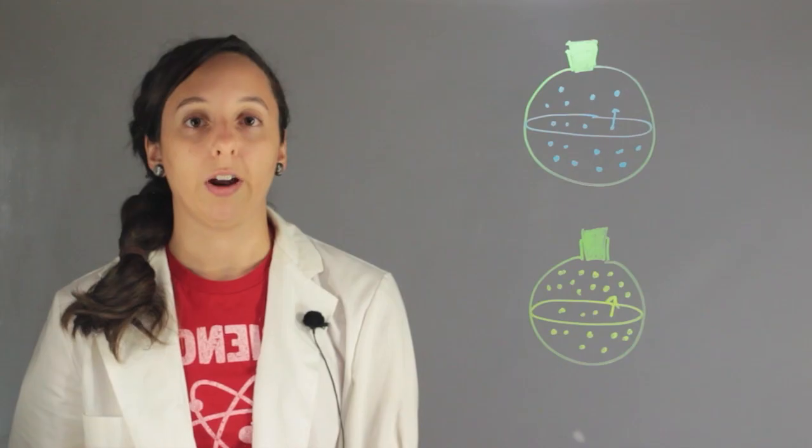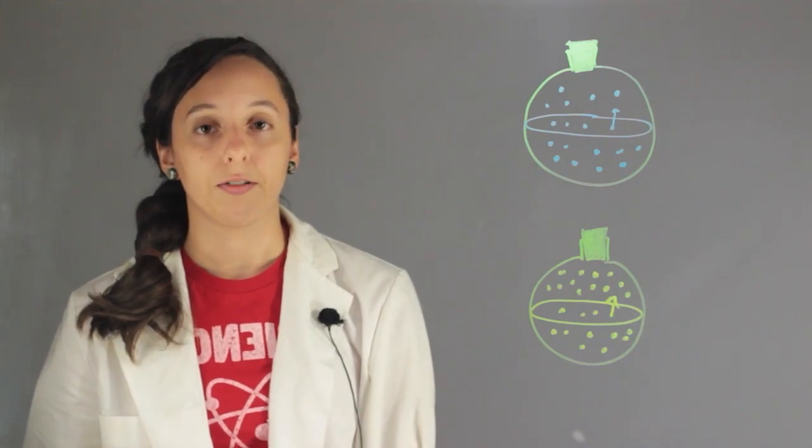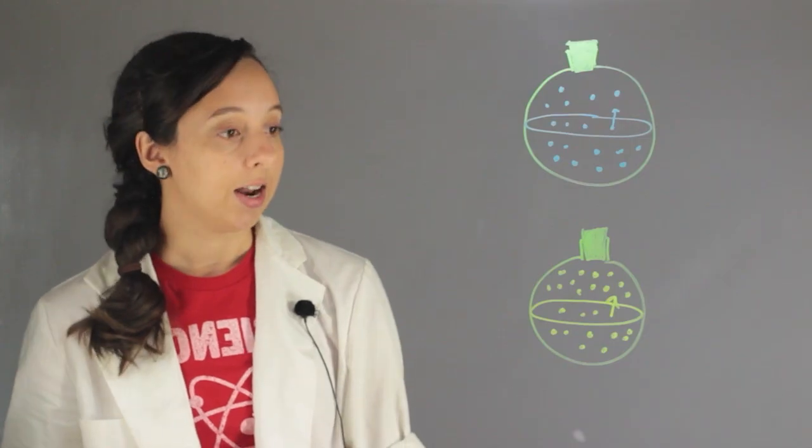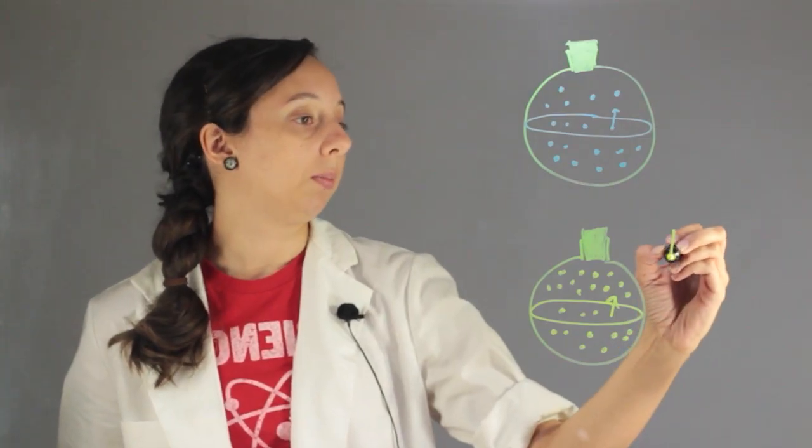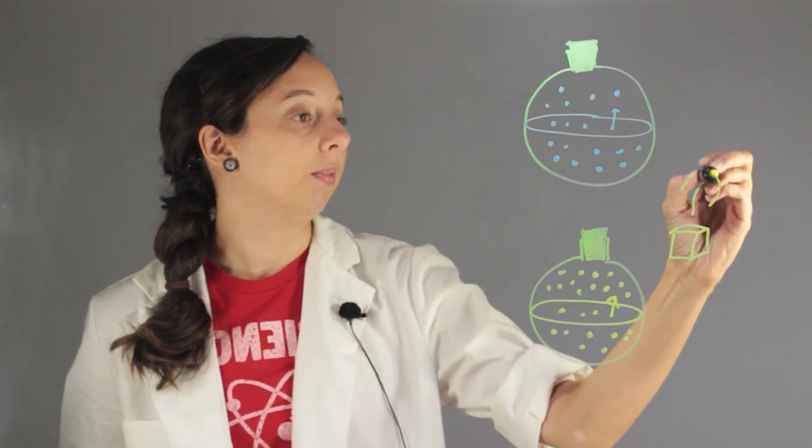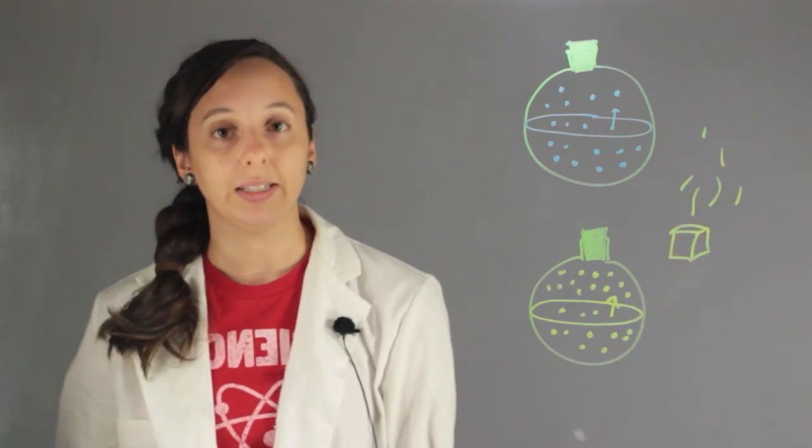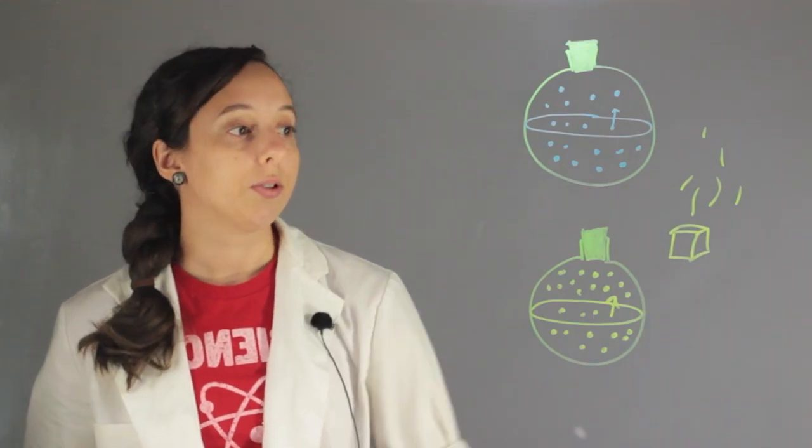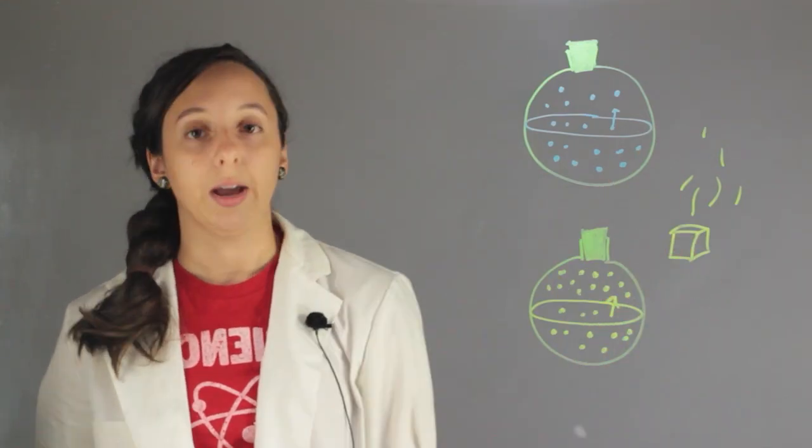So another example of something that's very volatile is frozen dry ice or frozen carbon dioxide. And that actually goes from being a complete solid to a gas. It sublimates. And that's extremely volatile. It happens very quickly. All of those solid particles want to escape and become gas particles.